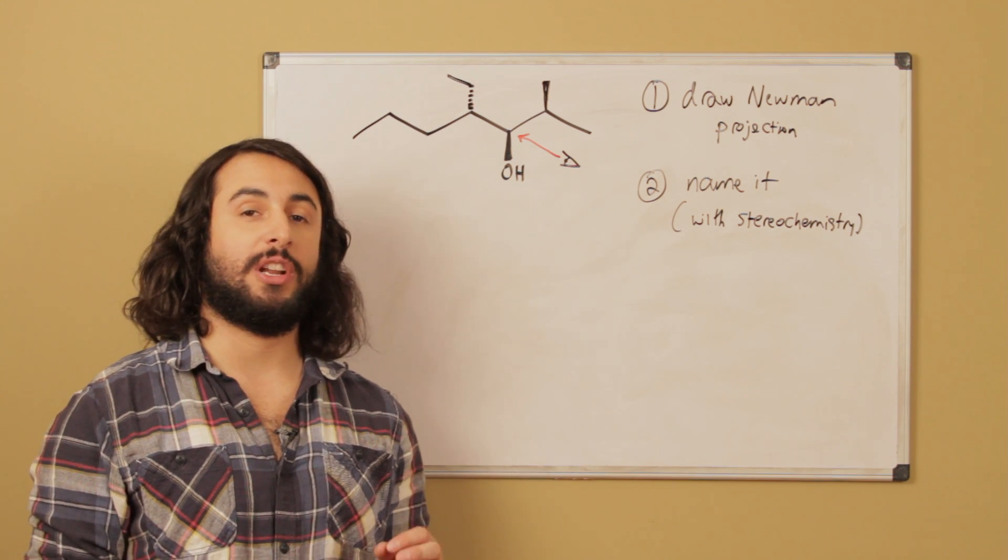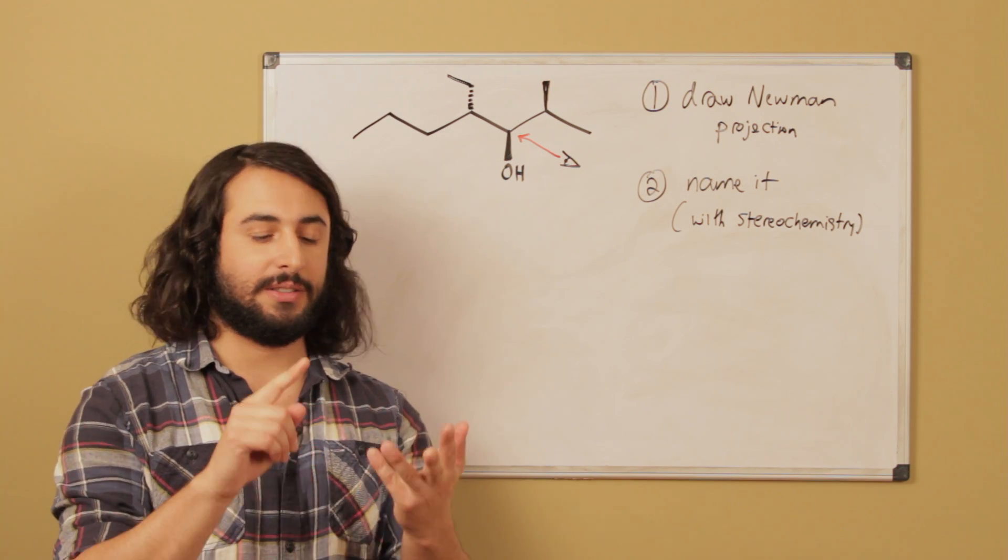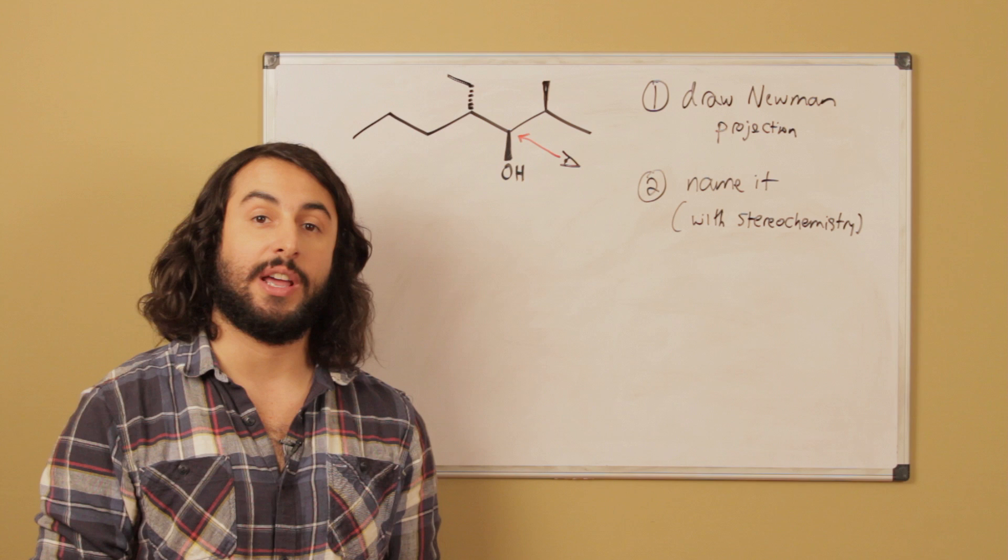So if any of this is confusing, you're going to want to check out my tutorials on Newman projections as well as nomenclature and Cahn-Ingold-Prelog convention, how to assign R and S.